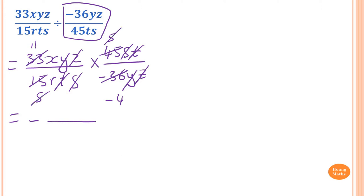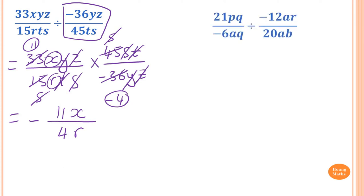We are left with 11x on top and 4r on the bottom, so the answer is negative 11x over 4r. Please stop the video and do this one yourself.